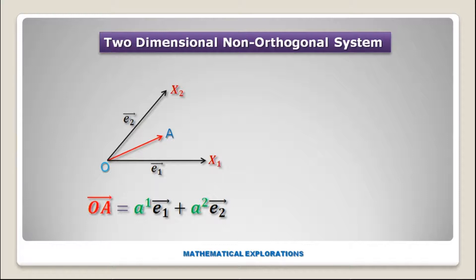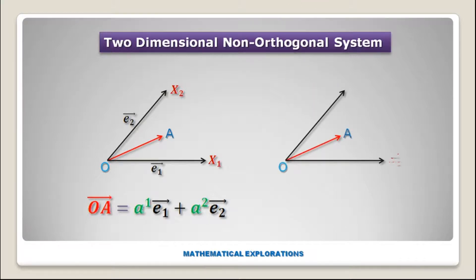Here we have taken superscripts, or upper suffixes, to denote the components. Now let us rotate the X1, X2 coordinate system to get the new coordinate system X1-prime, X2-prime.